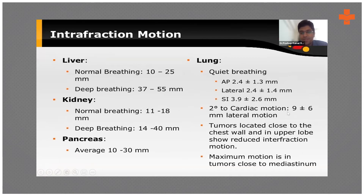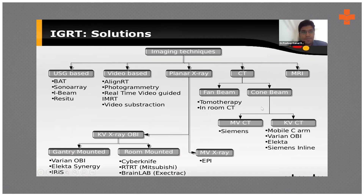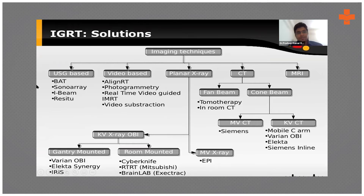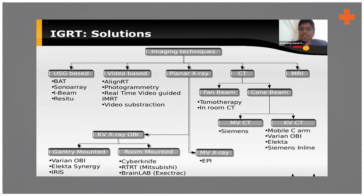These motion values help us correct geographical misses. As imaging techniques have advanced, their use with radiation has also increased. We can use ultrasound-guided, video-based, or X-ray-based imaging. With video-based systems, we use SGRT — surface-guided radiation therapy — which captures patient motion through sensors placed on the chest. This data is transmitted to the computer, which assesses how much the tumor is moving and adjusts the beam delivery accordingly so it precisely hits the target.